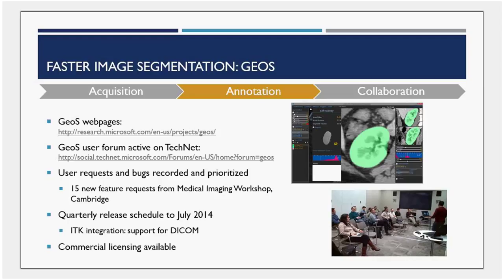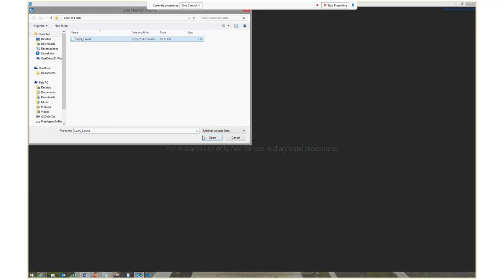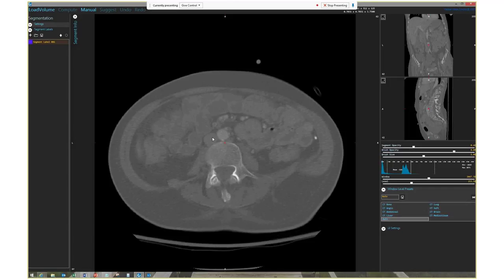I'm going to do a quick demo and show you what GEOS can do. We believe we've built a tool which is quite intuitive to use, and radiologists who have used it report it reduces their workload by an order of magnitude. Let me switch over to my monitor. You should see a large grey screen with 'For Research Use Only — Not For Use In Diagnostic Procedures' in the middle. This is the opening page of the GEOS application. I'll now load a medical image — here's one I prepared earlier.